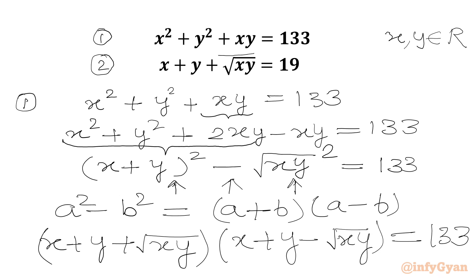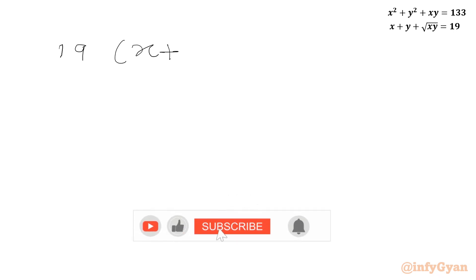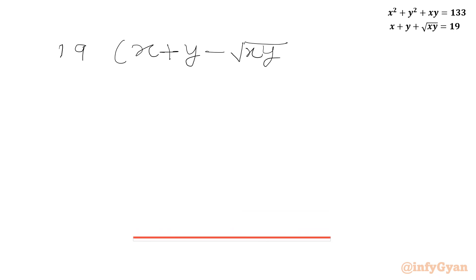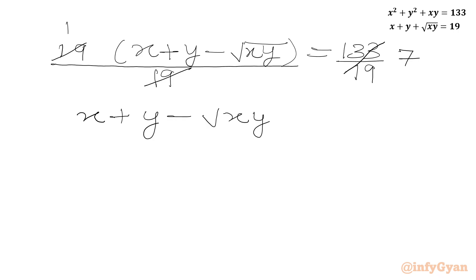We can see that the first factor matches equation 2, which tells us x plus y plus square root of xy equals 19. Substituting, we get 19 times x plus y minus square root of xy equals 133. Dividing both sides by 19, since 133 over 19 is 7, we obtain equation 3: x plus y minus square root of xy equals 7.